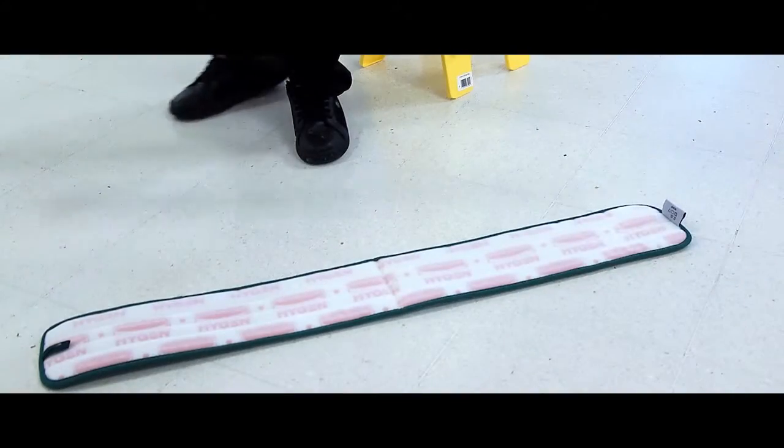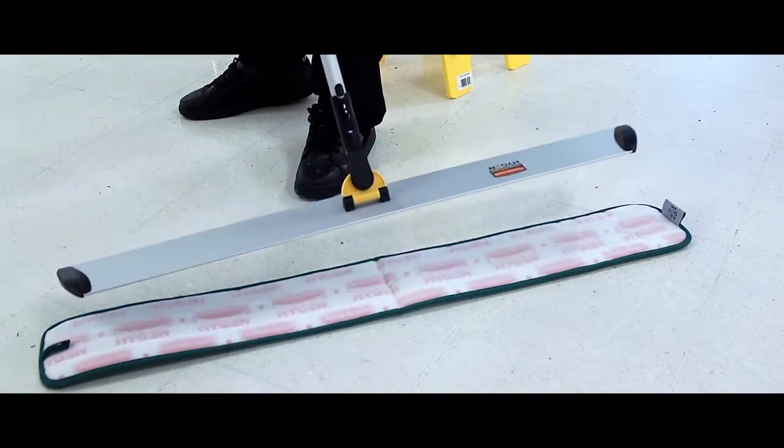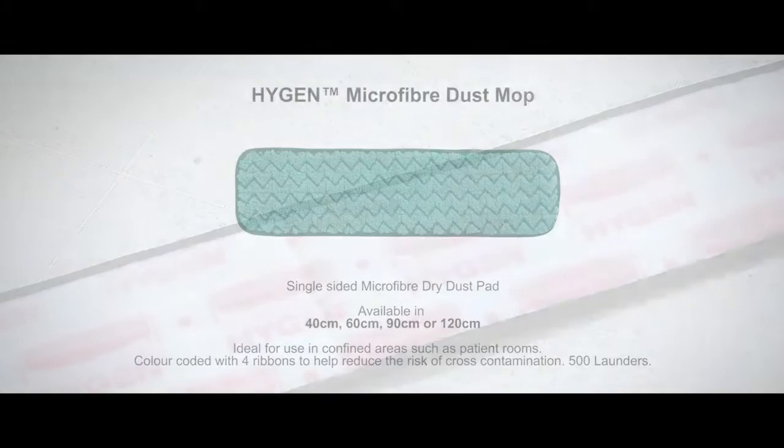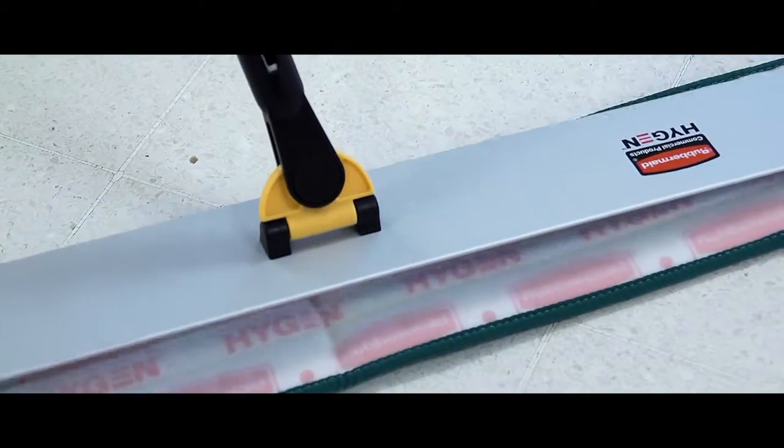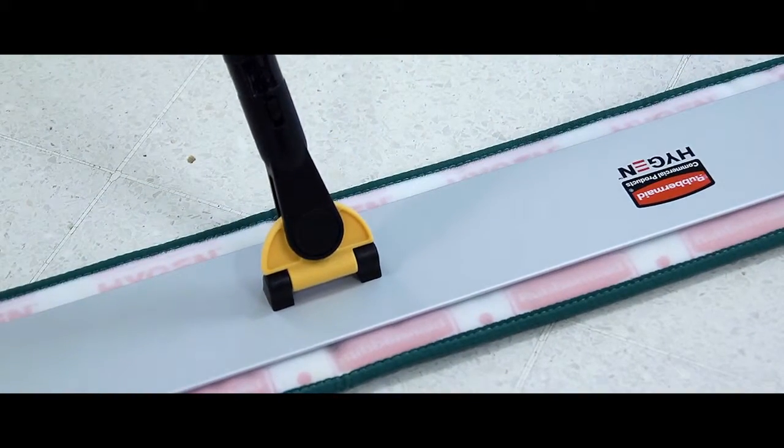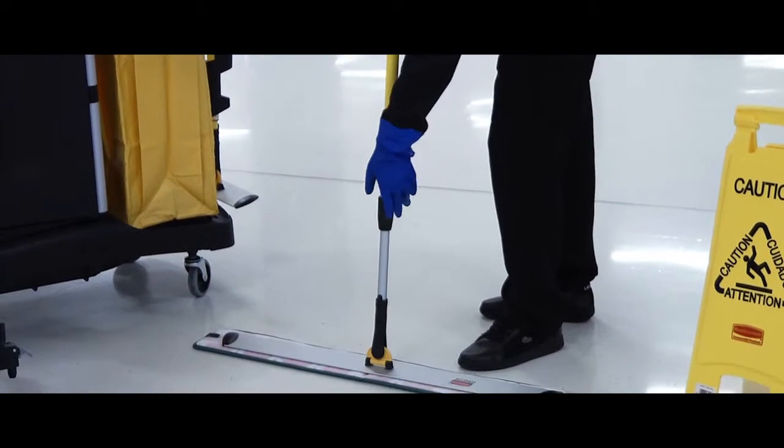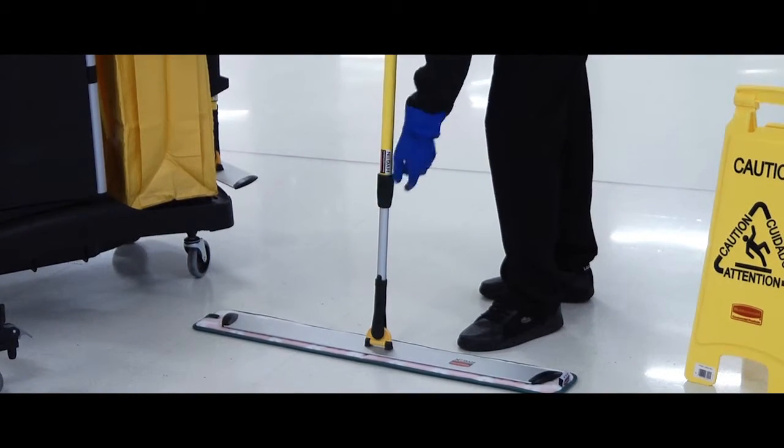Place relevant dust pad on the floor with the Velcro side up. Lower the frame onto the Velcro side of the dust pad. Adjust the ergonomic extension handle to the correct length. Typically, this should be to chin height.